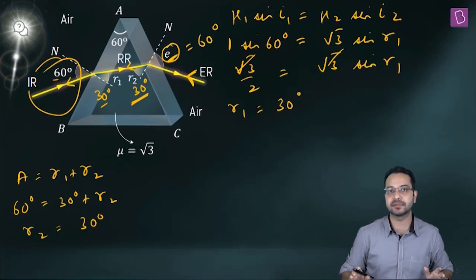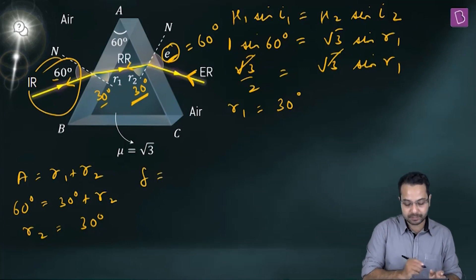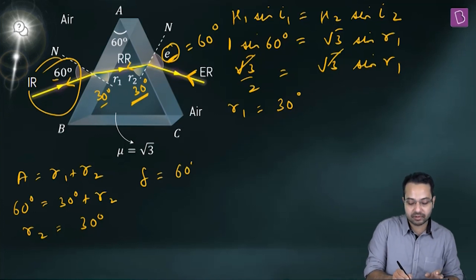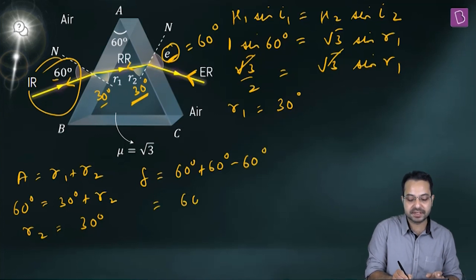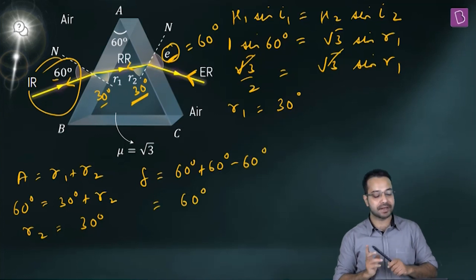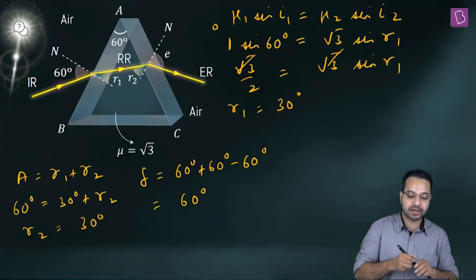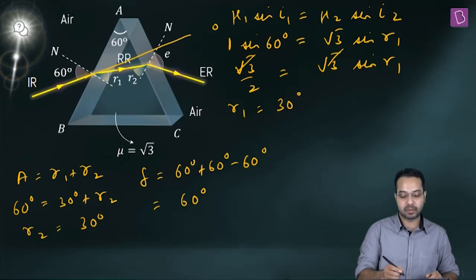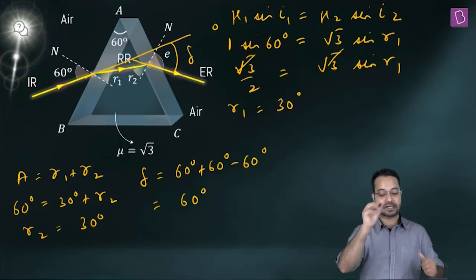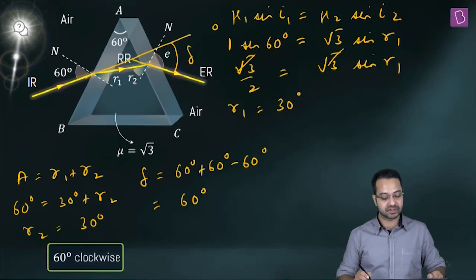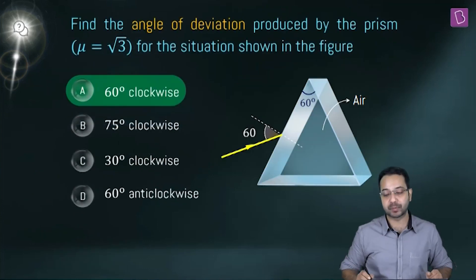So the angle of incidence and angle of emergence are both 60°, and finding δ is a piece of cake. δ = i + e − A = 60° + 60° − 60° = 60°. The direction is clockwise, so the answer is 60° clockwise. Option A is the right option.